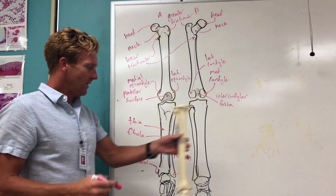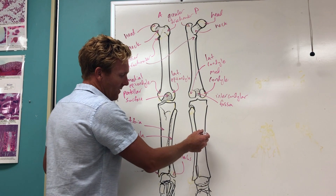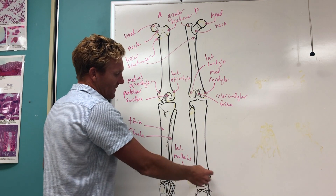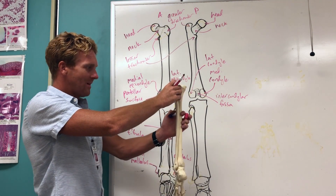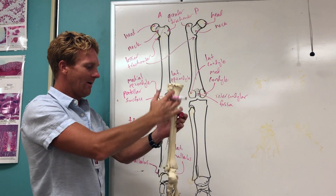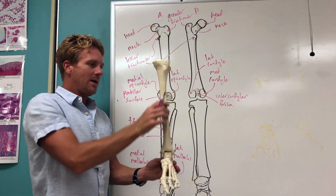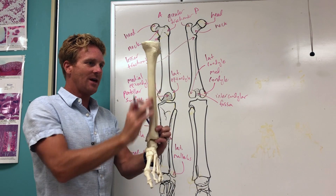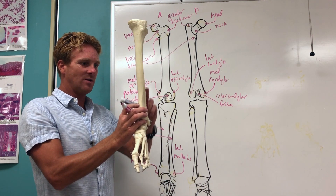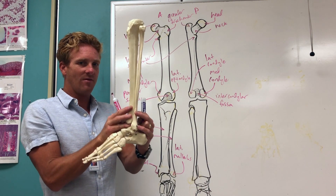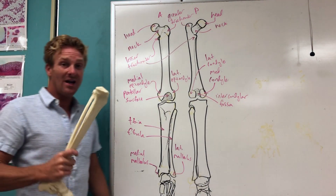If we flip this over and look at the posterior side of the tibia, we have the fibula here, the tibia here, the lateral malleolus, and the medial malleolus. What I wanted to show you is that the fibula really wraps around to the posterior or back side of the tibia as it goes more distally. The tibia sits on the medial side and is more anterior, whereas the fibula is on the lateral side and also goes behind — you can really see that from the lateral view here. So that's a quick overview of the leg.